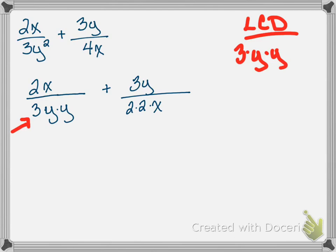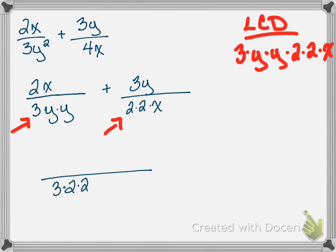For my LCD, I start with the first denominator: 3 times y times y. Then I check if 2 times 2 is already accounted for — it's not, so I add it. Then I check if x is already there — it's not, so I add it. My LCD is 3 times y times y times 2 times 2 times x.